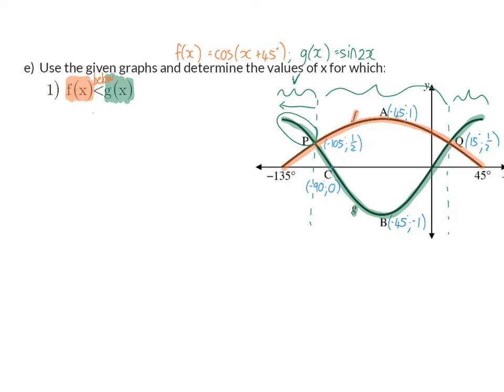Our next interval is between minus 105 and 15, and here we can see that our orange graph is now above or bigger than the green one, so that is not part of our answer.